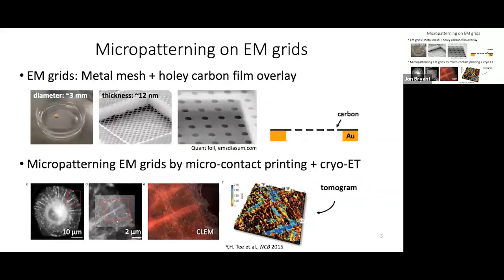We and other researchers use EM grids comprised of a thin metal mesh, about 3 millimeters in diameter, overlaid with a perforated thin film, usually carbon or silicon dioxide. For adherent mammalian cells, we use gold grids, which are less cytotoxic than copper. Micropatterning of EM grids was first performed by Tee et al. using microcontact printing, where cells assembled on circular ECM micropatterns were used with correlative light and electron microscopy. However, microcontact printing requires contact between a stamp and the substrate — in our hands on standard Quantifoil EM grids, this is a destructive technique. Due to the fragile nature of EM grids, we were looking for a micropatterning technique that would maintain the grid's structural integrity.